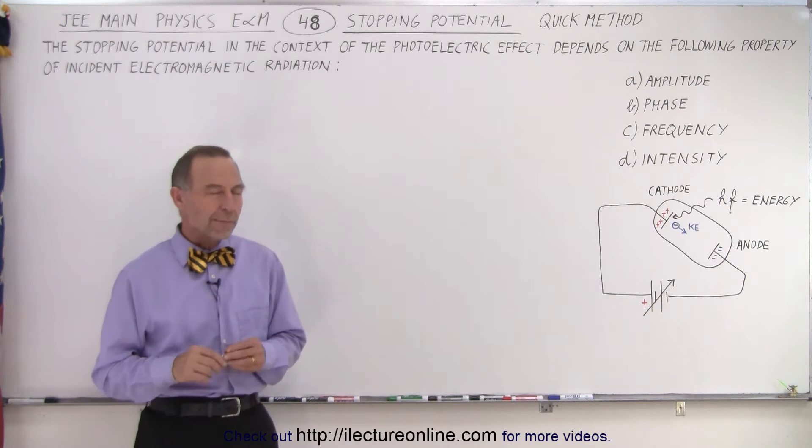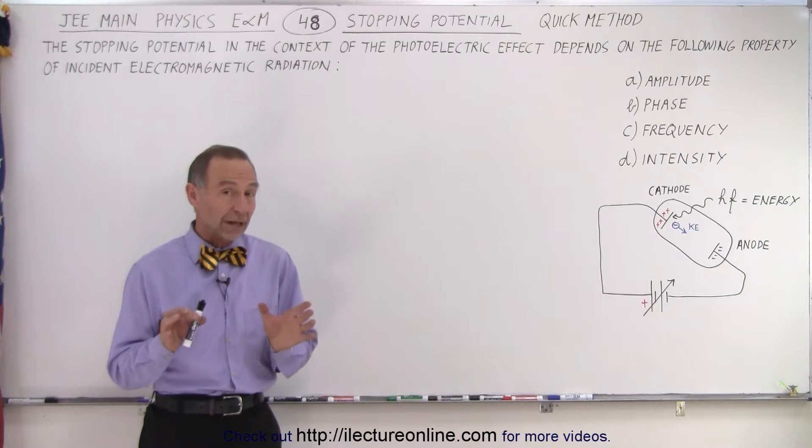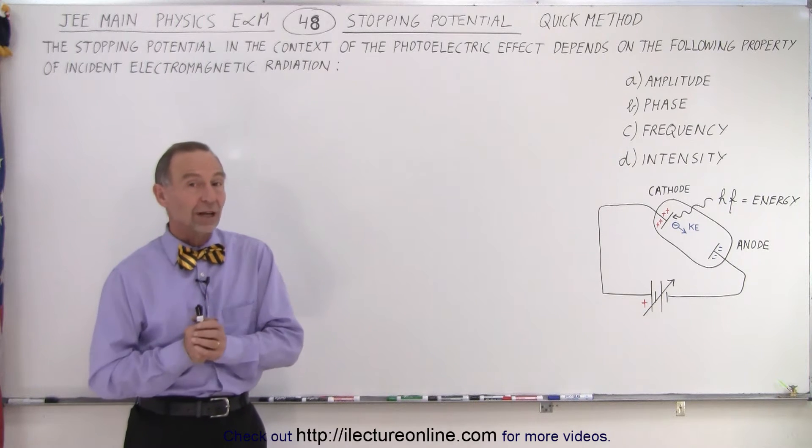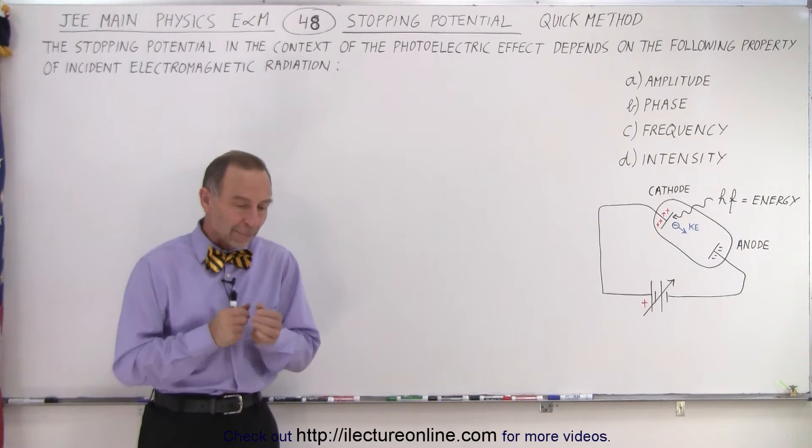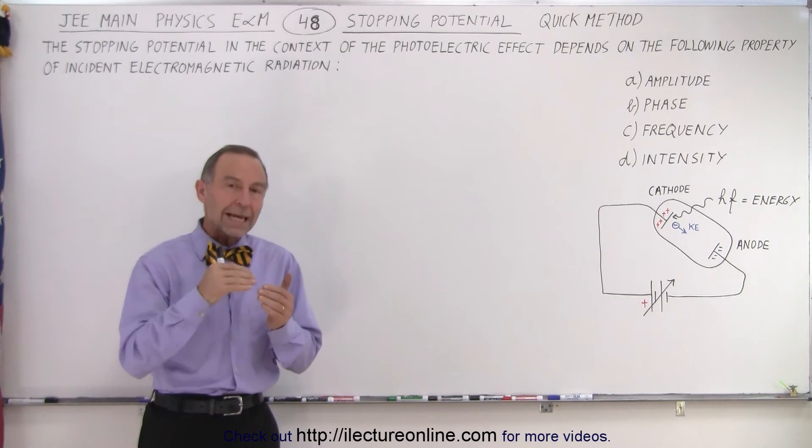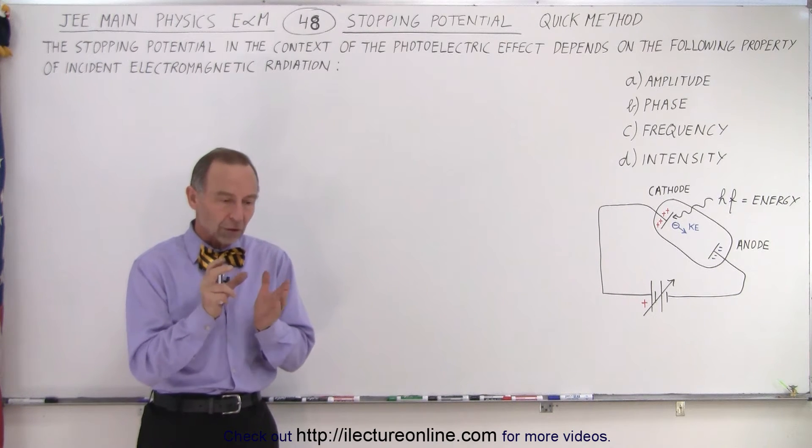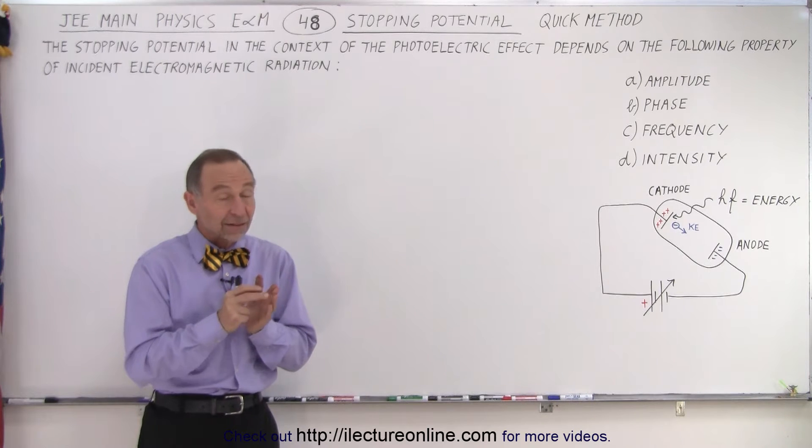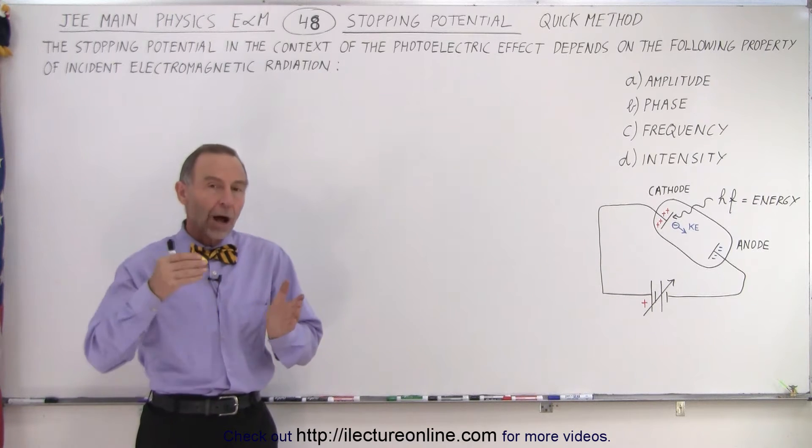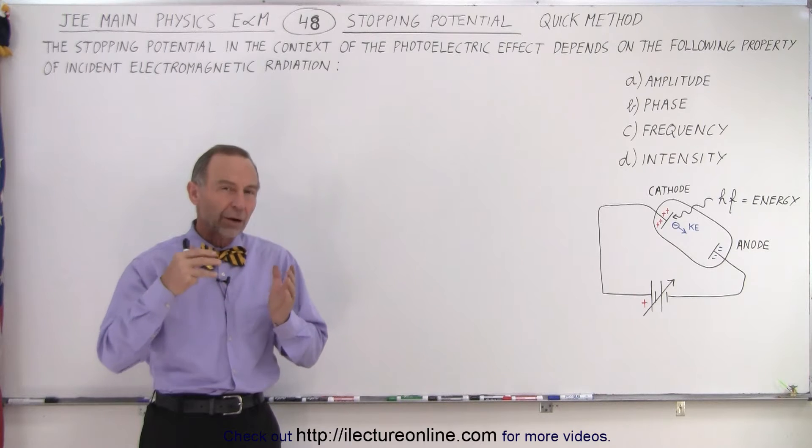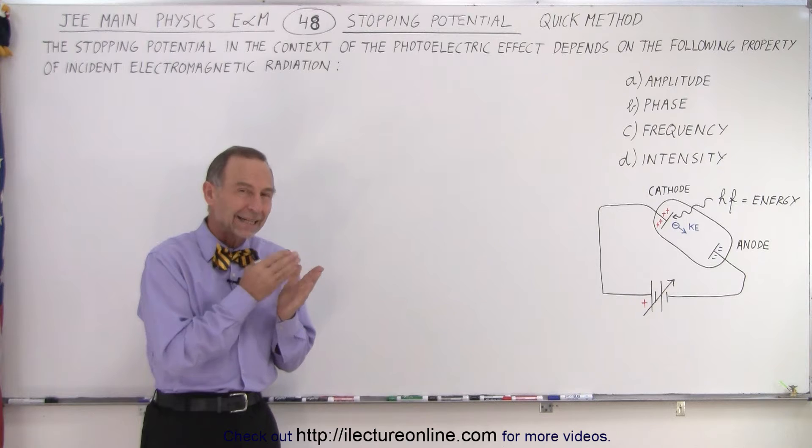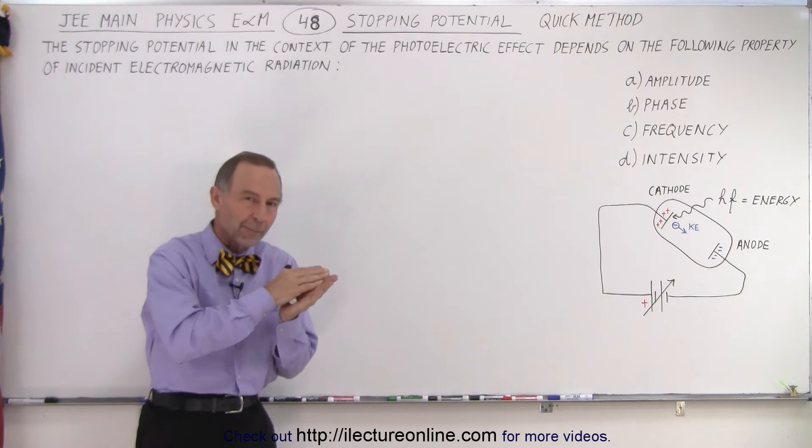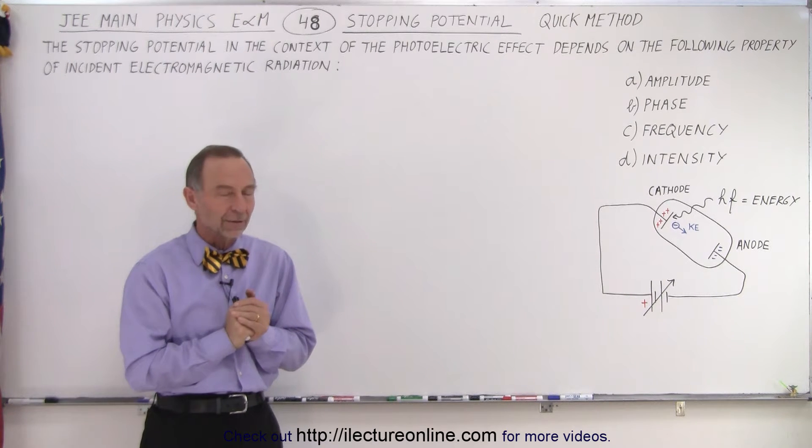So you may not remember the photoelectric effect experiment that was done by Einstein and for which he actually got the Nobel Prize. He proved that if he illuminated a plate with a certain amount of light, let's say red light, no matter how strong he made that light, no matter how intense, no matter how much he cranked up the intensity, he could not get electrons to jump free from the metal he was exposing to the light.